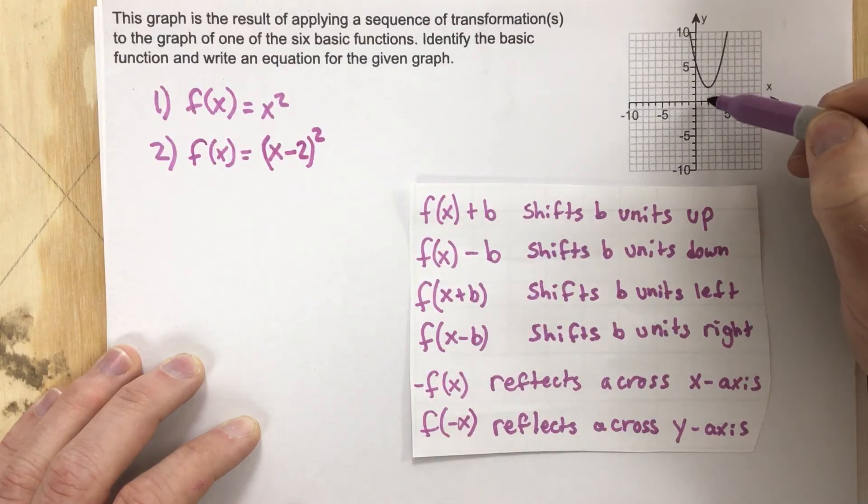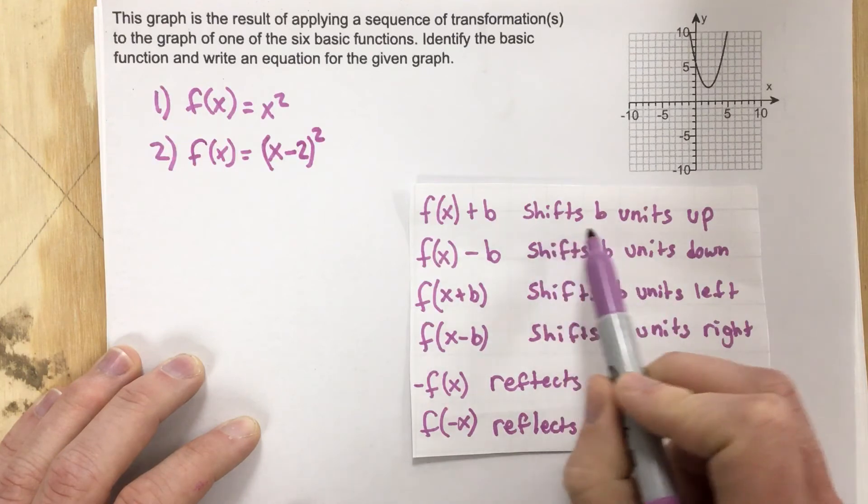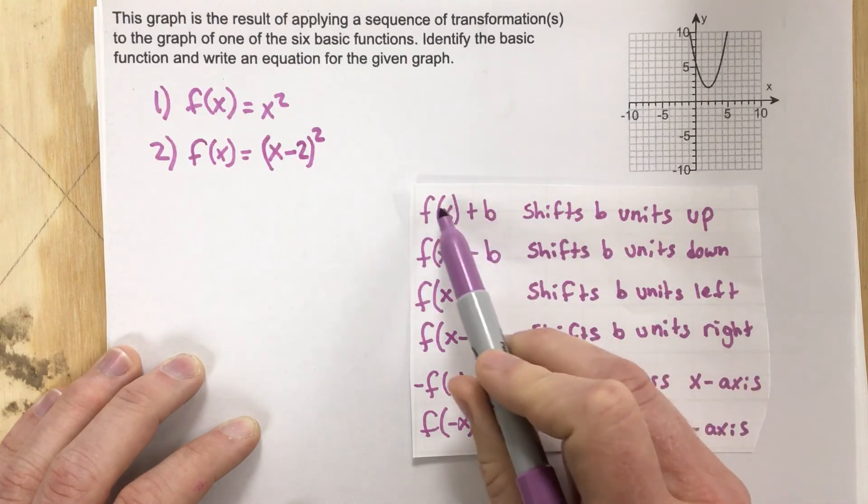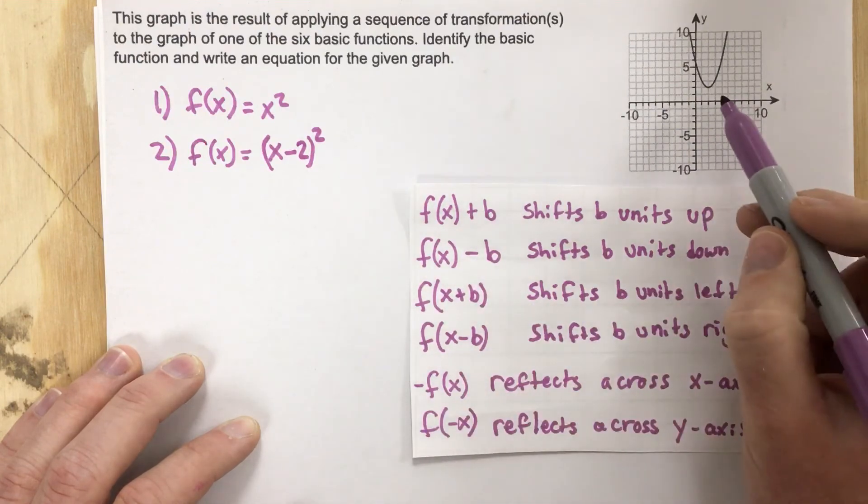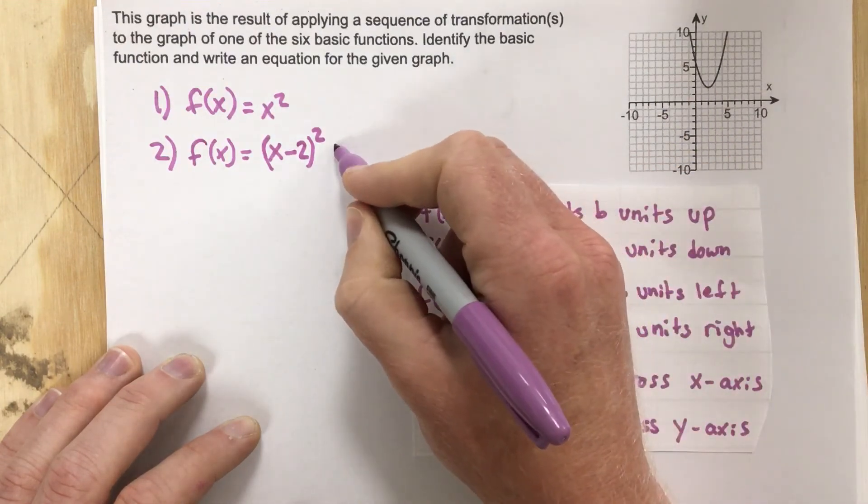You can also see it's been shifted upwards two as well. So we're going to shift this upwards two, which means we need to add to the outside of the function. So the f of x function we need to add to the outside. We're going to add two units to the outside and we get plus two.